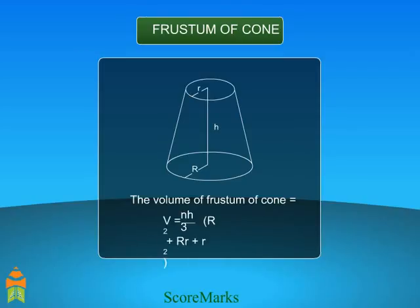The volume of frustum of a cone is V equals πh/3(R² + Rr + r²).